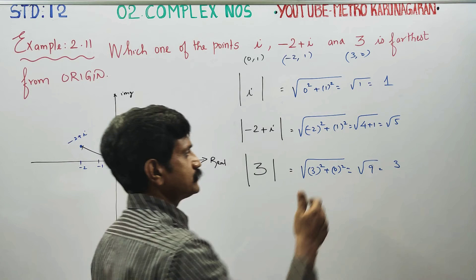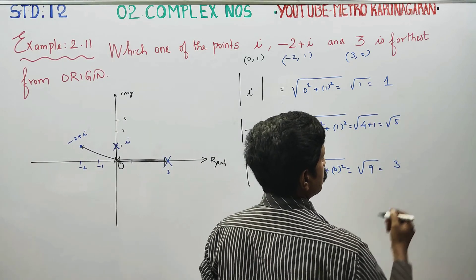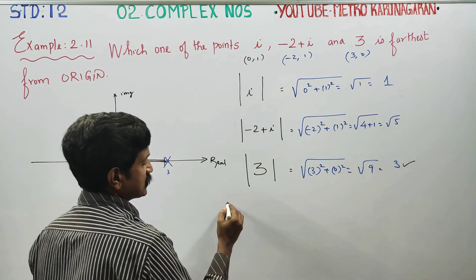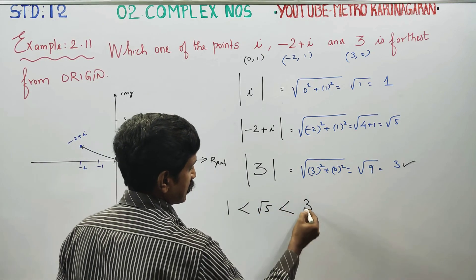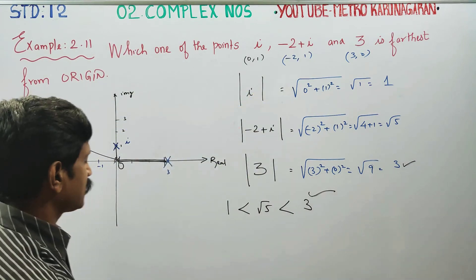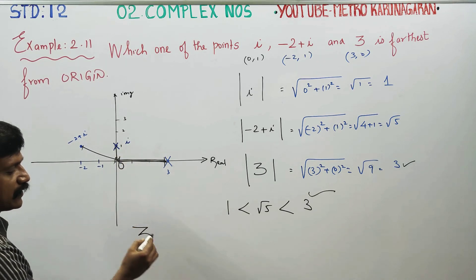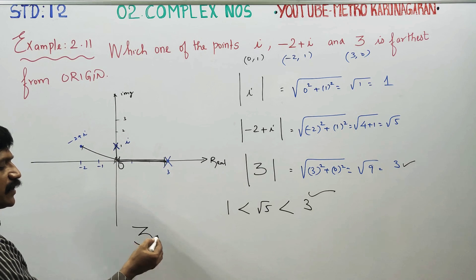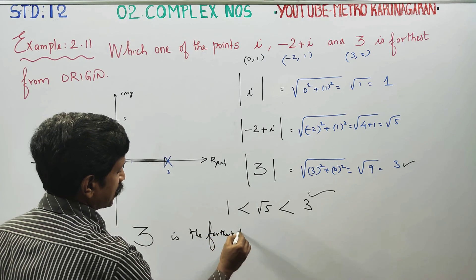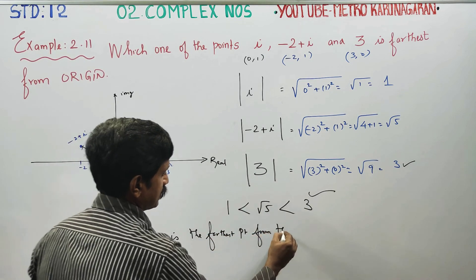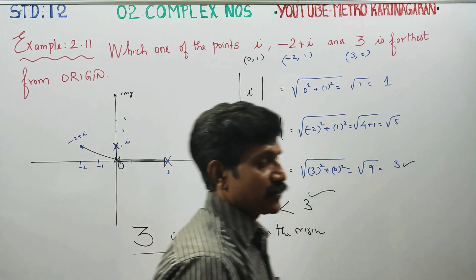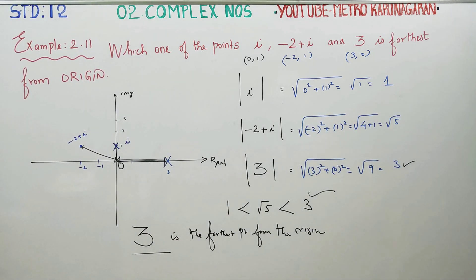So 1 is less than root 5 is less than 3. The biggest number is 3. Which one of the following points is farthest from the origin? The complex number 3, a purely real number, is the farthest point from the origin when compared to i and minus 2 plus i. You can see the distance comparatively. Thank you.